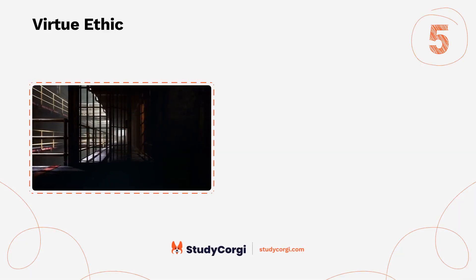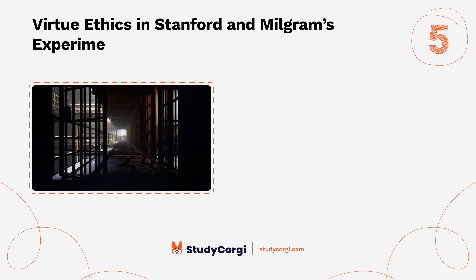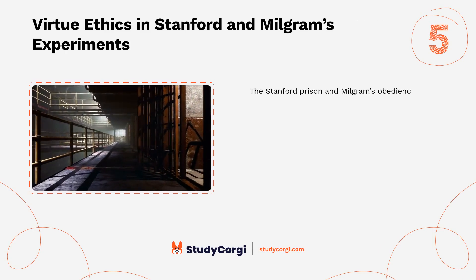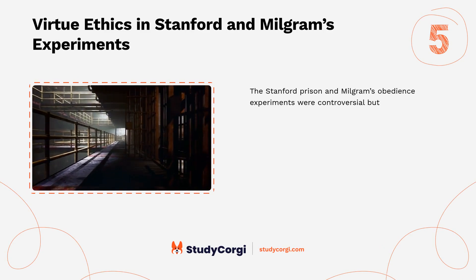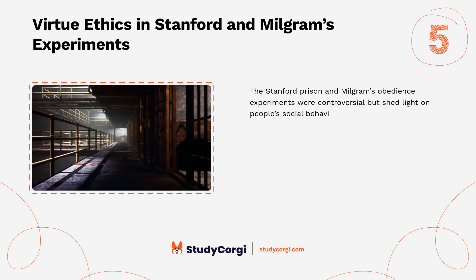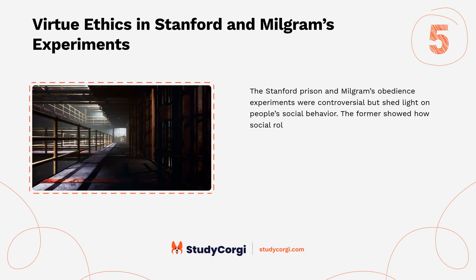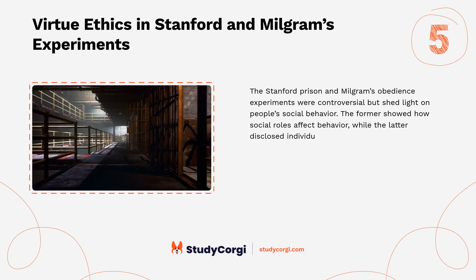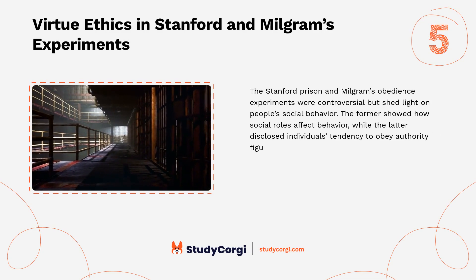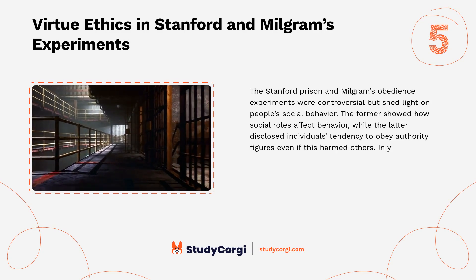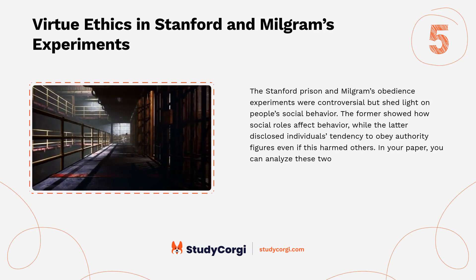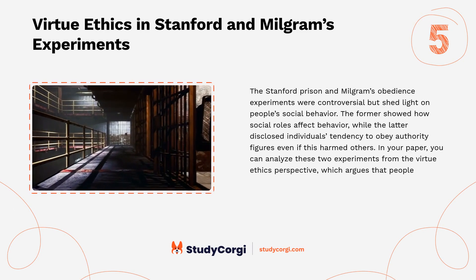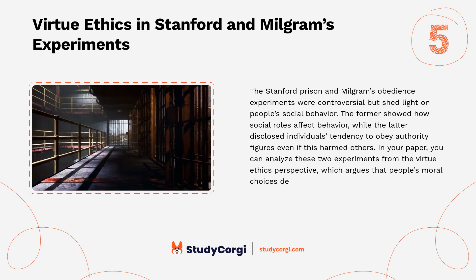Virtue ethics in Stanford and Milgram's experiments: the Stanford Prison and Milgram's obedience experiments were controversial but shed light on people's social behavior. The former showed how social roles affect behavior, while the latter disclosed individuals' tendency to obey authority figures even if this harmed others. In your paper, you can analyze these two experiments from the virtue ethics perspective, which argues that people's moral choices depend on character traits.